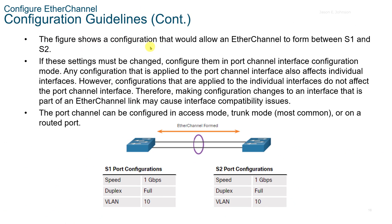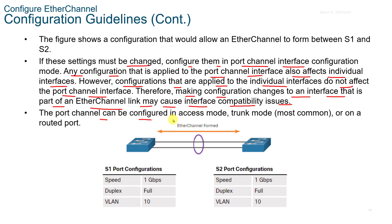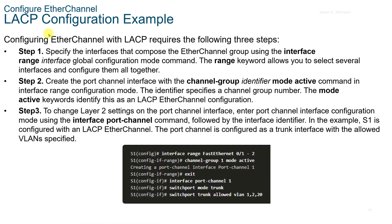The figure shows a configuration that would allow an EtherChannel to form between S1 and S2. If settings must be changed, configure them in the Port Channel Interface. Any configuration applied to the Port Channel Interface also affects individual interfaces. However, configurations applied to individual interfaces do not affect the Port Channel Interface. Therefore, it's important to make sure that configuration changes to an interface as part of an EtherChannel are made on the Port Channel Interface to avoid compatibility issues. The Port Channel can be configured in Access Mode, Trunk Mode, or on a routed port.